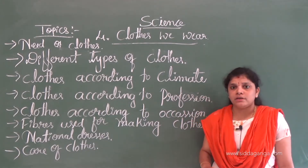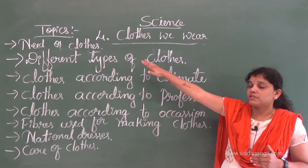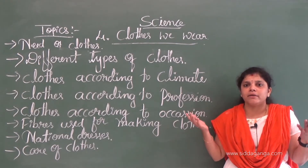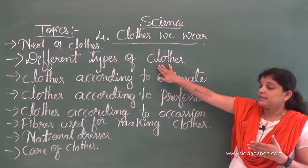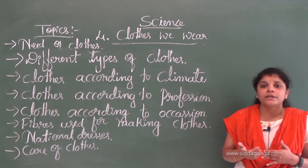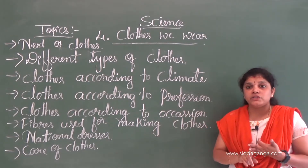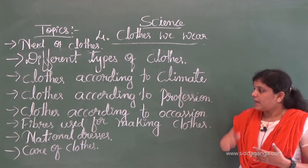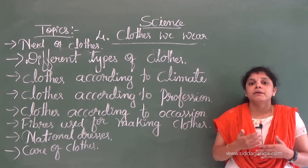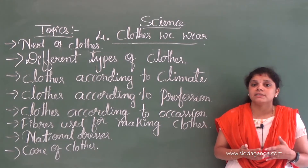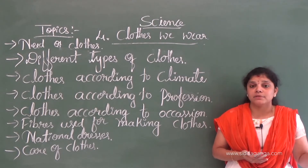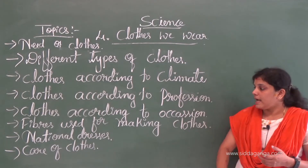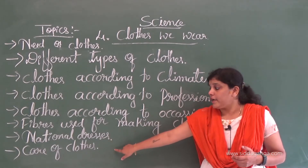First we are going to discuss the need of clothes — why we need clothes. Then different types of clothes. Clothes are different because of climate, profession, occasion, and tradition. We use different types of fibers to make clothes: some are natural fibers from plants and animals, and some are man-made fibers. We'll also cover national dresses and care of clothes.